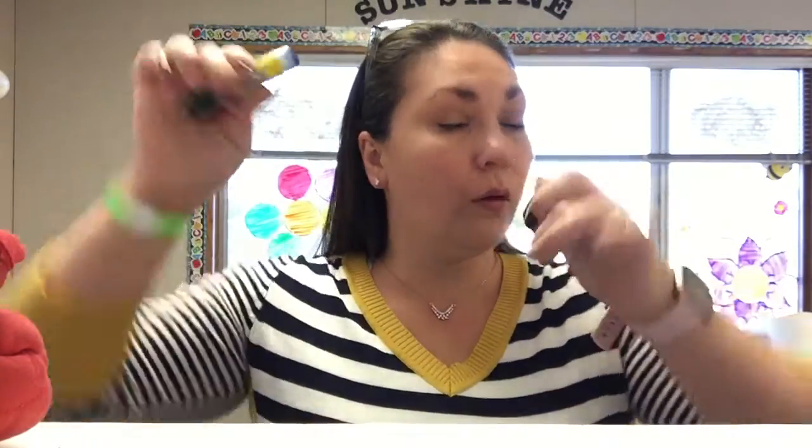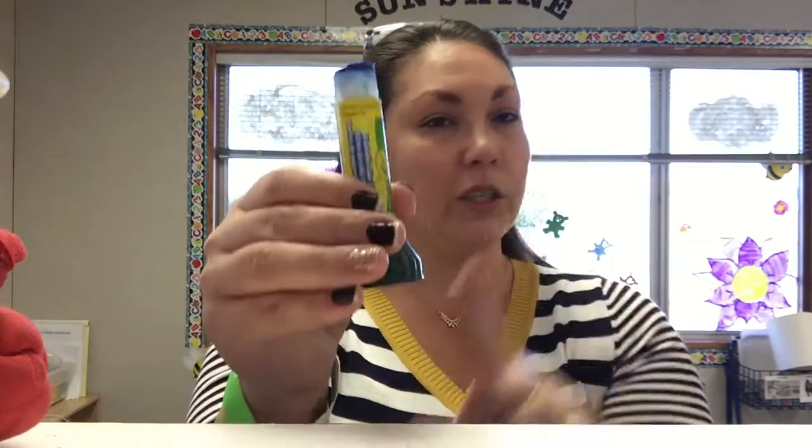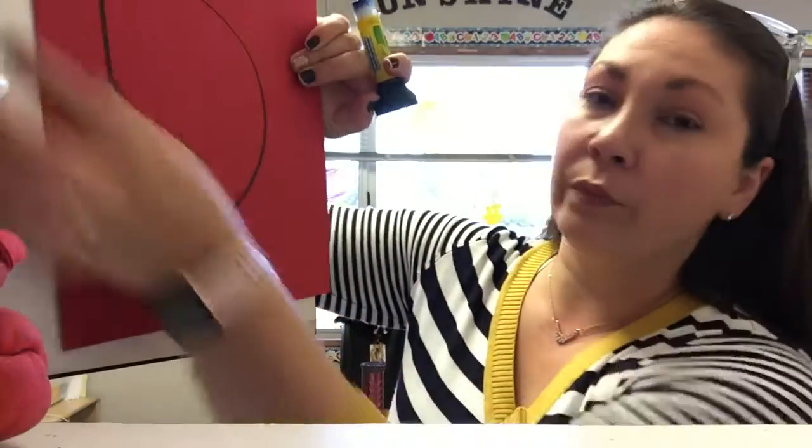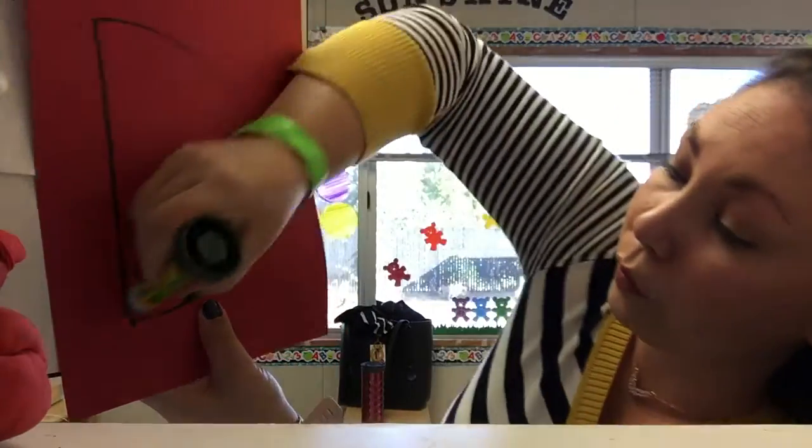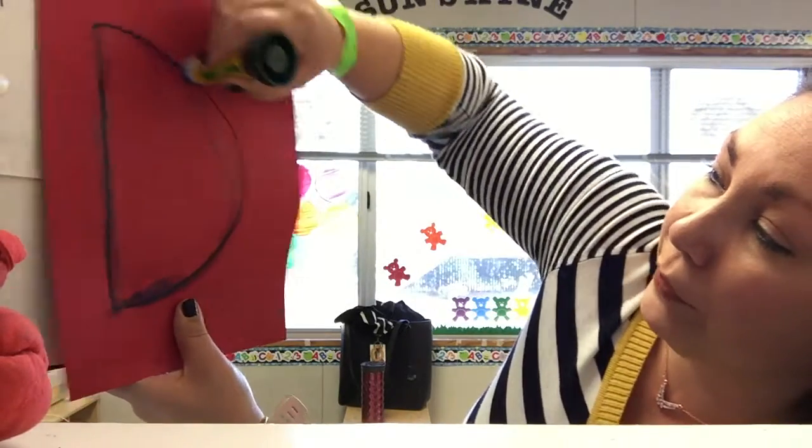We're going to open our glue, put the bottom on so we don't lose our cap, and twist just enough so we can use it. Then I am going to put the glue right along my letter D, just like this. I'm basically tracing the letter D with my glue.